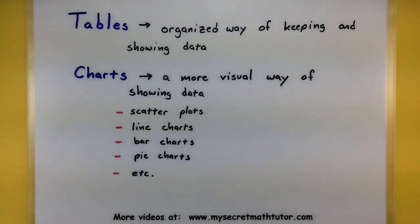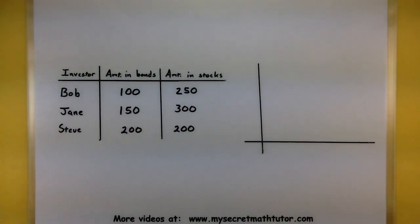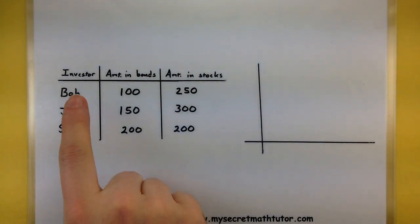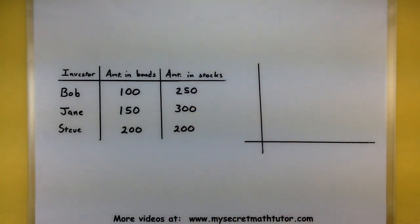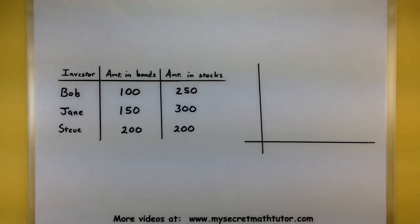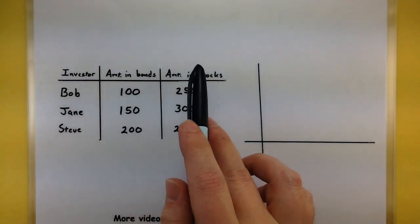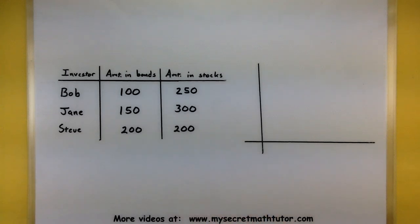Let's take a look at examples between tables and charts. I have a fairly basic example of a table here. It lists the investors and how much money they have in both bonds and stocks, giving us all the information we need about any one of these investors. For example, if I wanted to see how much Jane had in stocks, I could find her row and the stocks column and see that Jane has $300 in stocks.